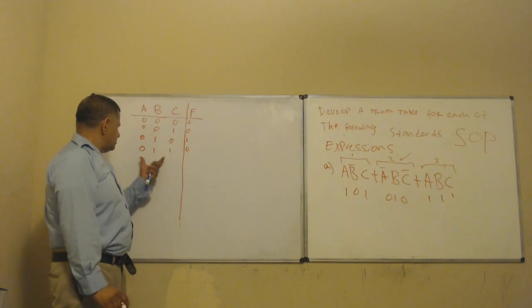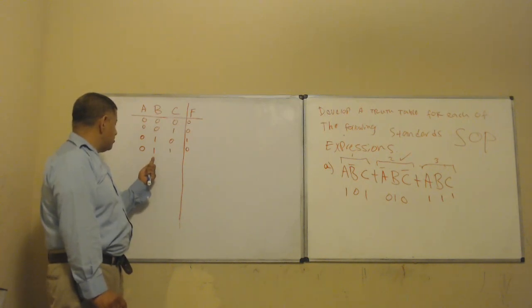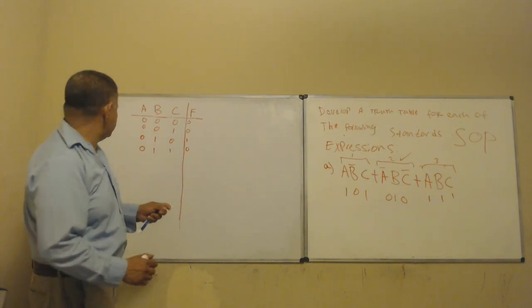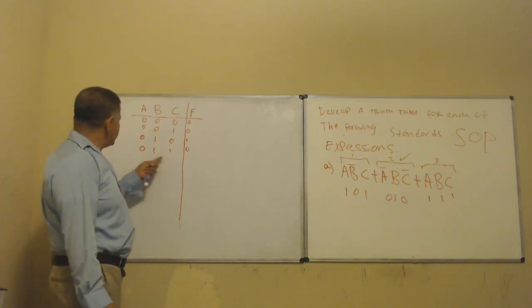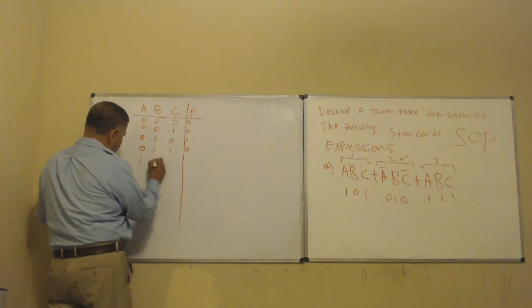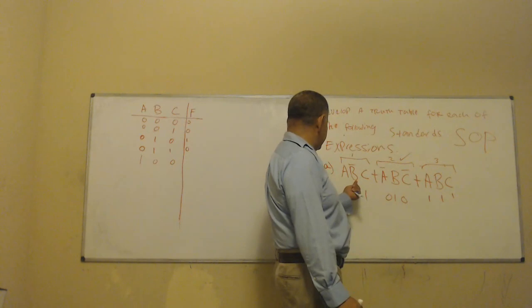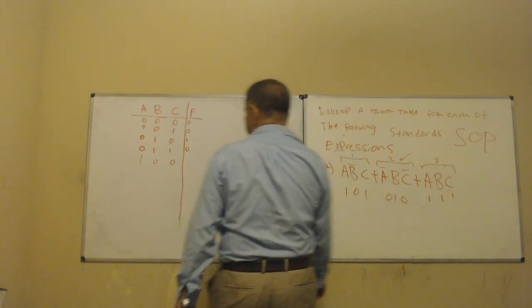Next, I change the leading bit: one, zero, zero. Do I have anything corresponding to not-B, not-C? I see not-C and I see not-B, but not both together in the same term — so that is also a zero.